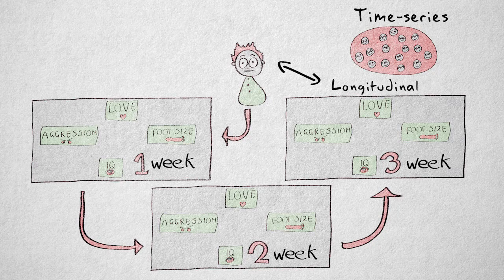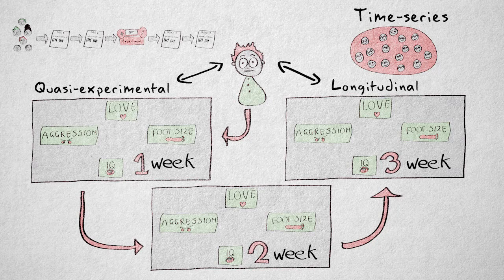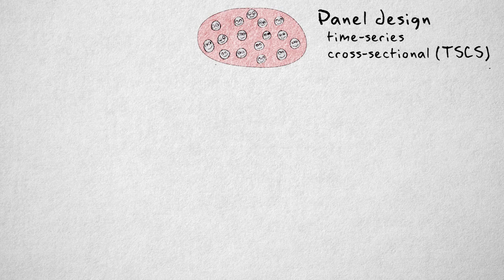The term time series is also used for quasi-experimental designs, where one or more conditions are measured repeatedly before and after an intervention or placebo is administered. The term panel design, or time series cross-sectional design, is used for non-experimental studies that follow more than one individual over a longer period of time, without an intervention or placebo.